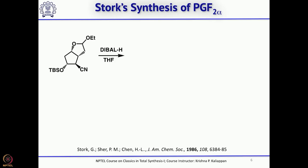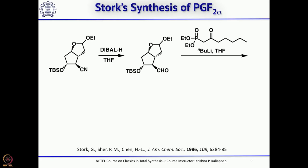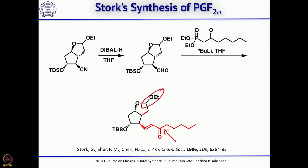Once you have the cyanide, it can be reduced with DIBAL at low temperature (−78°C) to get the aldehyde. Then a Horner-Wadsworth-Emmons (Wittig) reaction gives the trans (E) double bond. What remains is to reduce this carbonyl to alcohol, convert the lactol ethyl ether to the lactol, carry out the Wittig reaction, and remove the TBS group to give PGF2α.